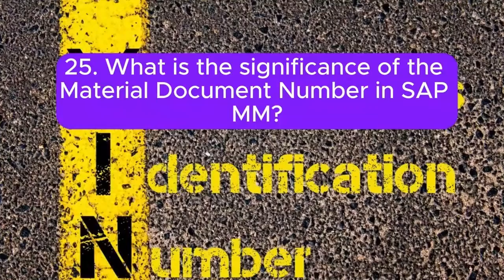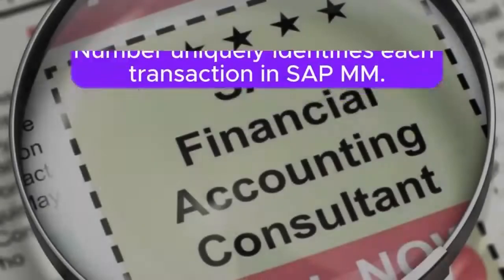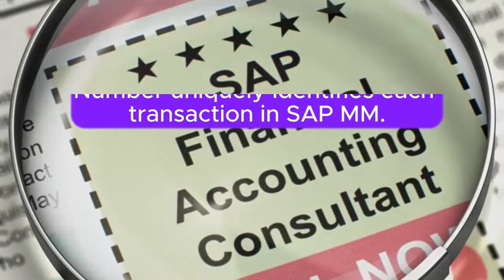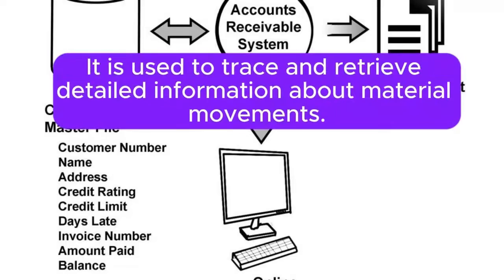Question 25: What is the significance of the material document number in SAP MM? Answer: The material document number uniquely identifies each transaction in SAP MM. It is used to trace and retrieve detailed information about material movements.